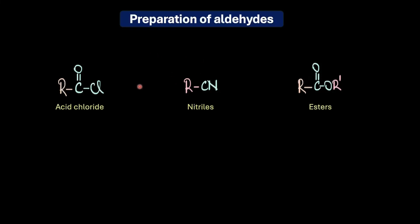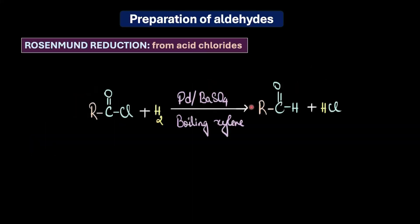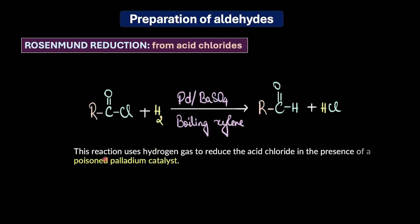First, let's begin with acid chlorides. We can prepare aldehydes from acid chlorides via Rosenmund reduction. This is a classic method of preparing aldehydes where we use hydrogen gas in the presence of poisoned palladium catalyst.